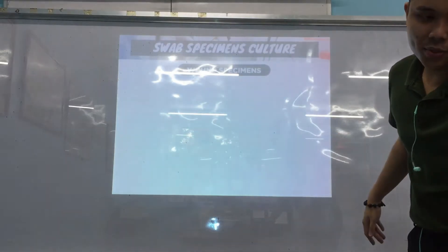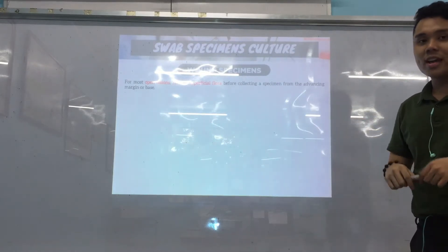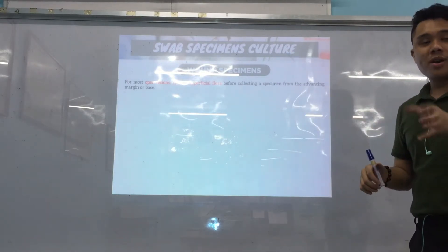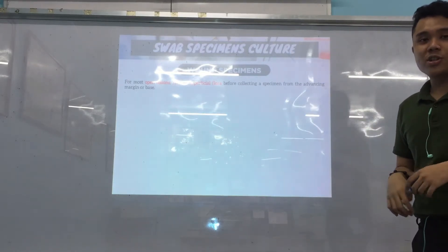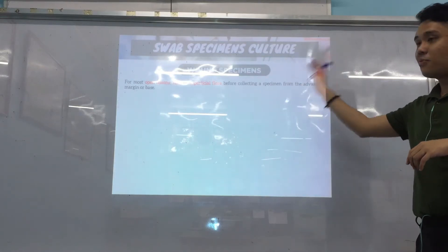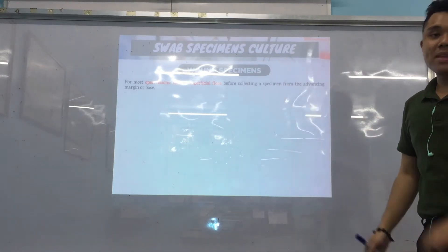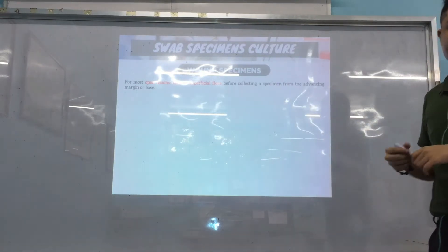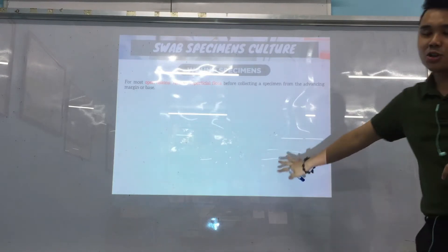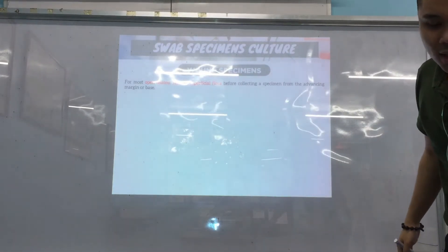For open lesions, if the wound is open, you remove superficial flora by decontamination before collecting from the advancing margin or base. We'll look at a picture of an open lesion later.